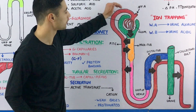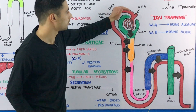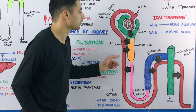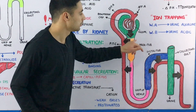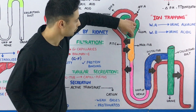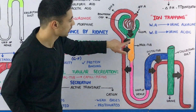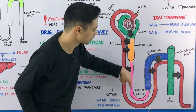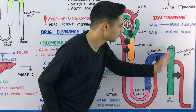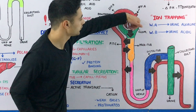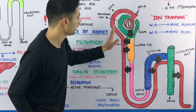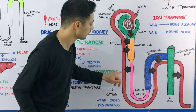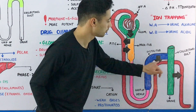The efferent arteriole exits the glomerular capillaries and forms the peritubular capillary network, especially around the proximal convoluted tubule. The Bowman's capsule continues into the proximal tubule, shown in orange, then the loop of Henle in pink, the distal tubule, and finally the collecting duct. The efferent arteriole's capillary network then joins to form the renal vein and enters the systemic circulation.